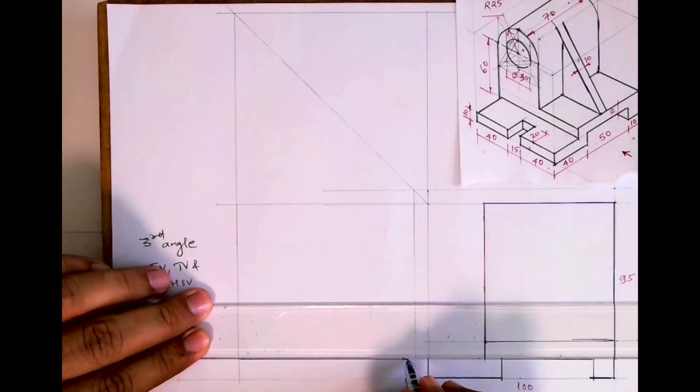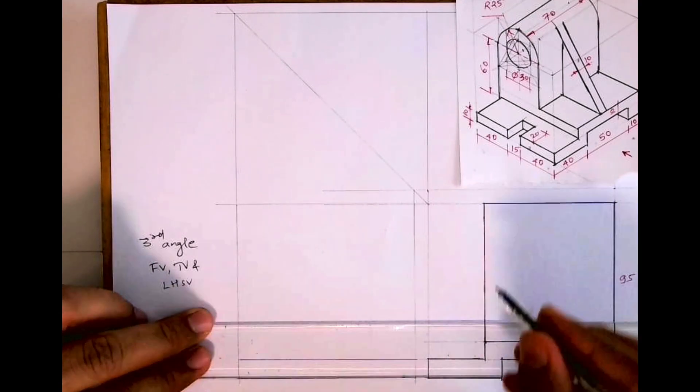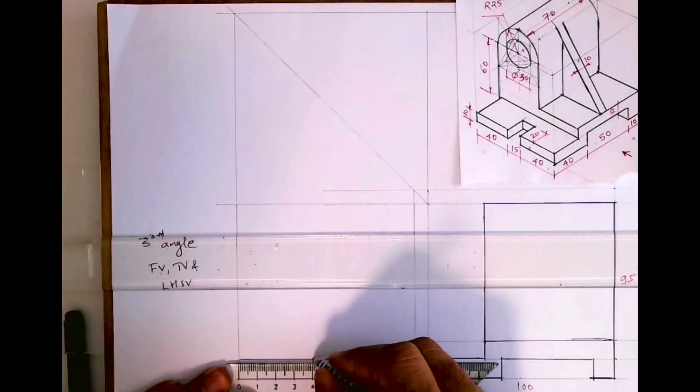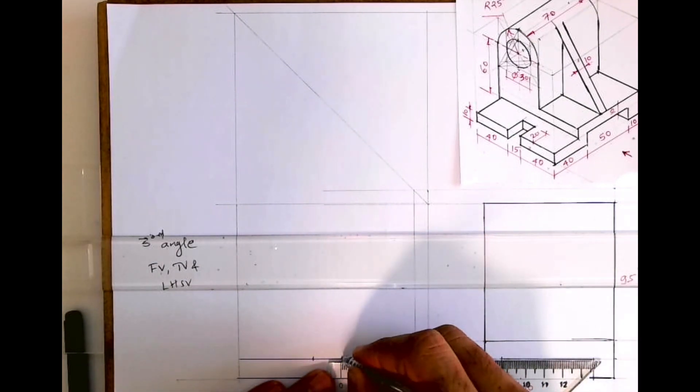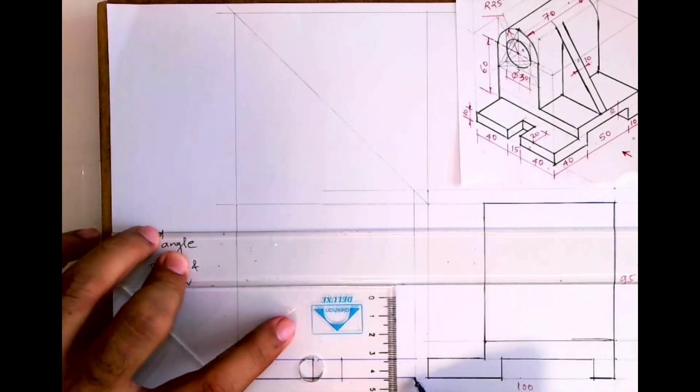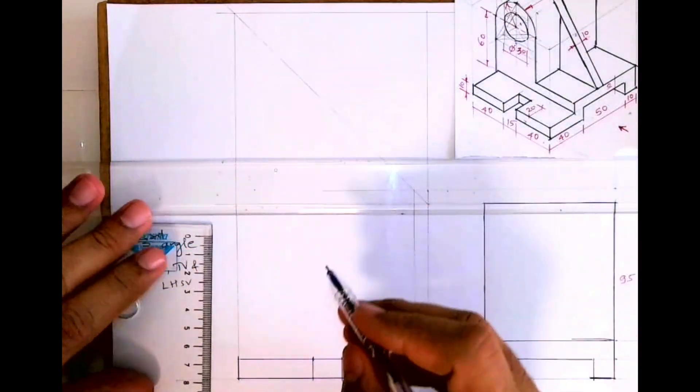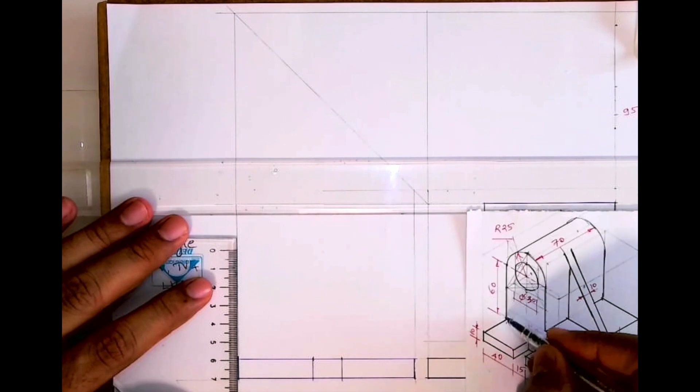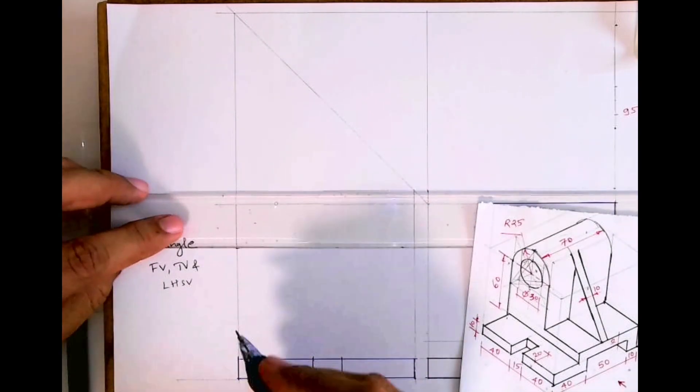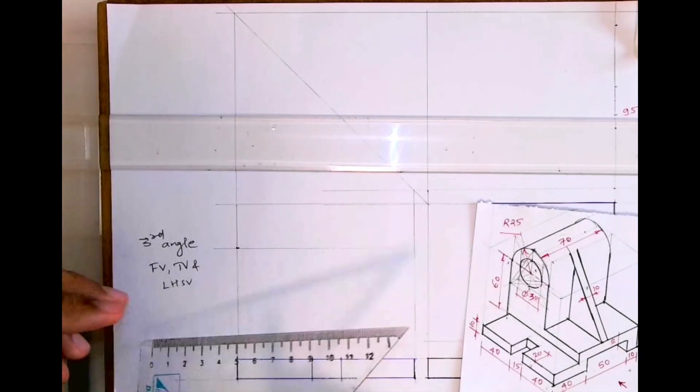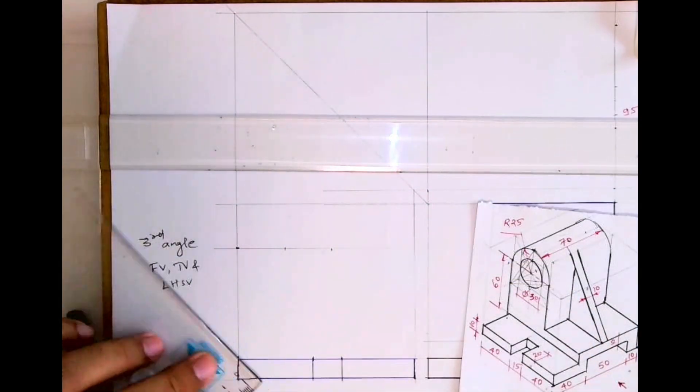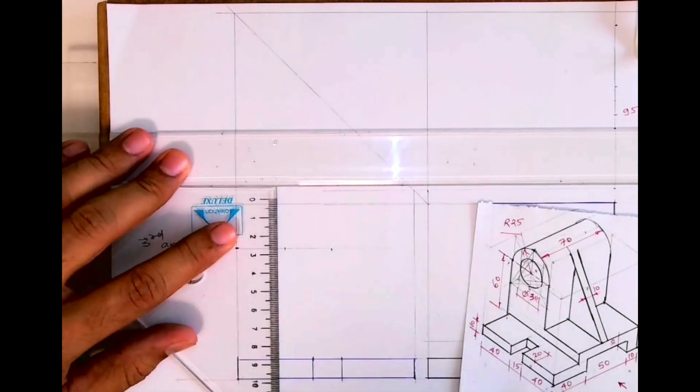So first I will draw lower plate and that 40, 15, 40 we can mark. After that we'll go up to draw circle. How much I have to go up? I have to go up by 60, and then go inside by 25. And you can draw axis line. See, this you take 25 inside and you can draw axis line.